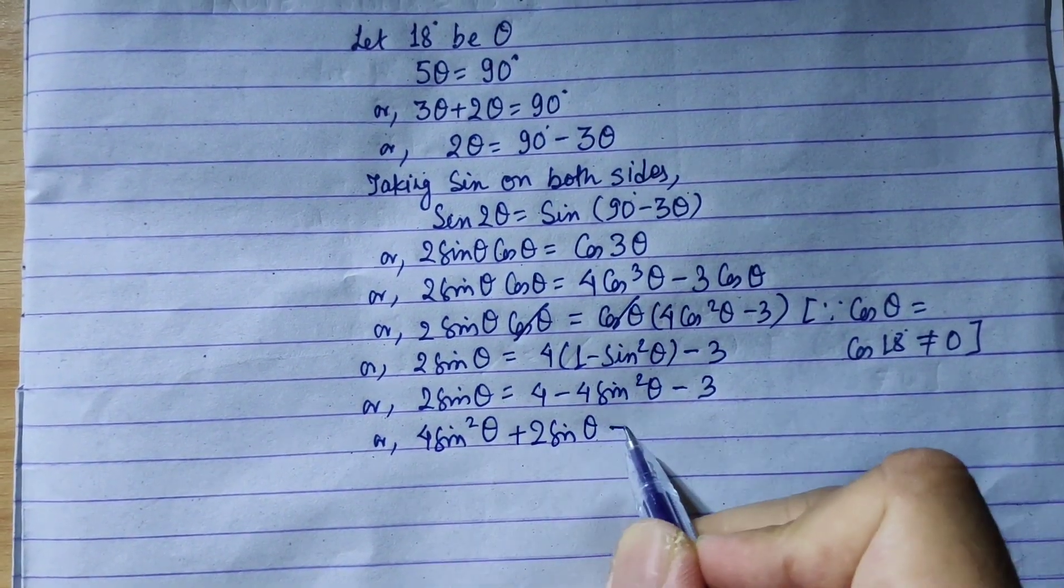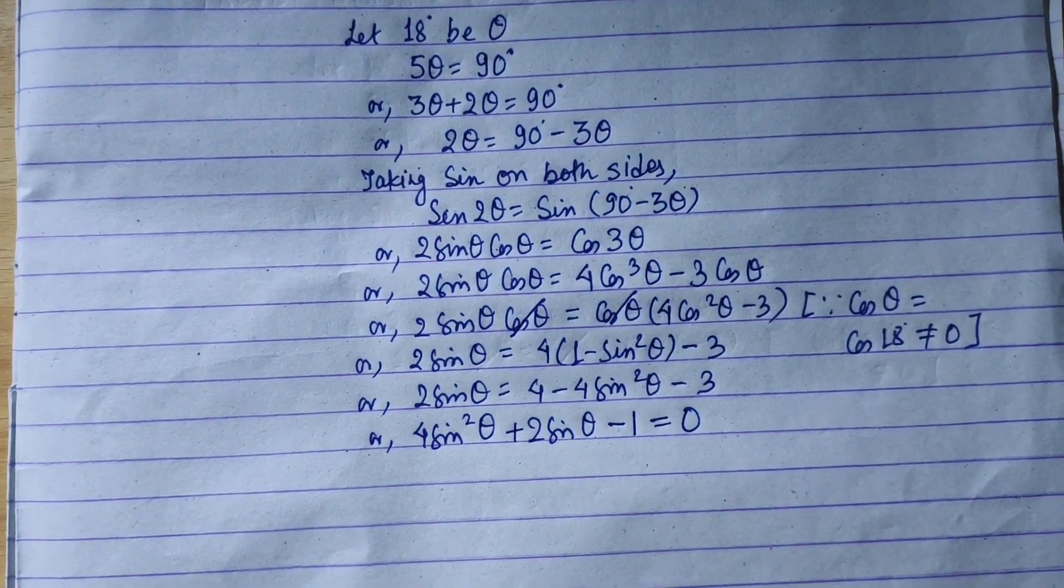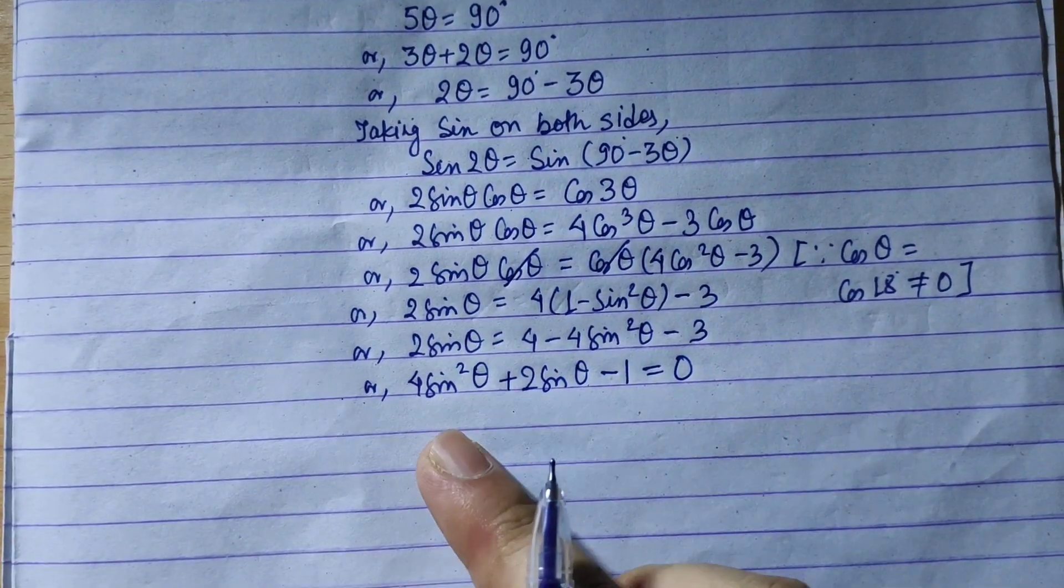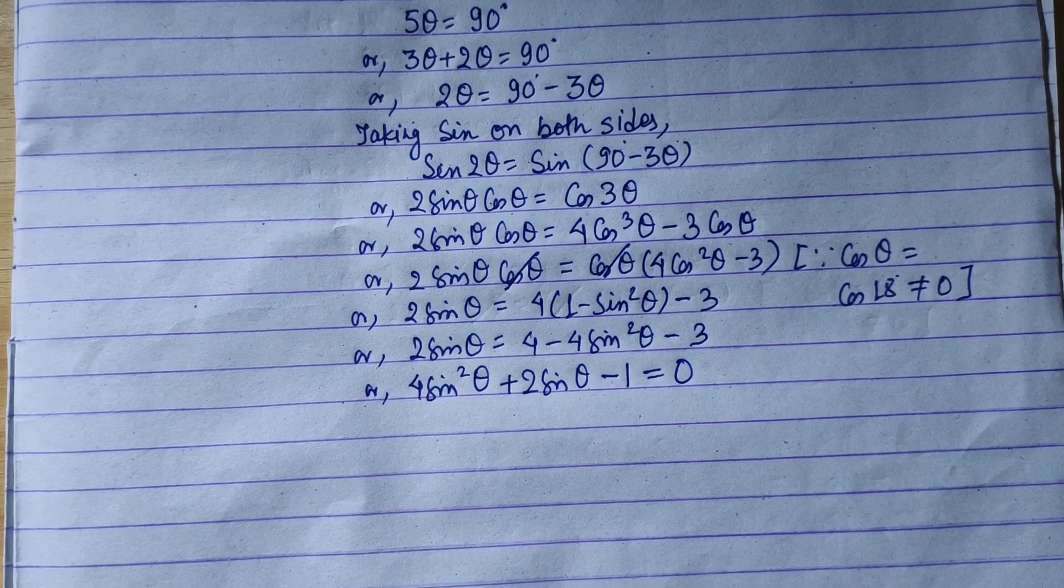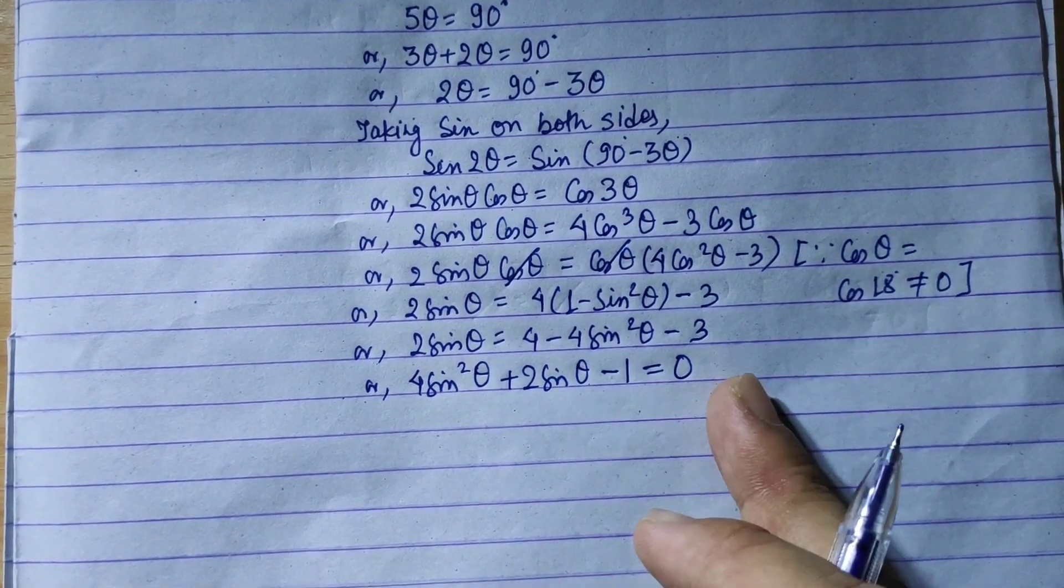4 minus 3 equals 1. So we get minus 1 on the right. So this is in quadratic form ax square plus bx plus c equals 0.